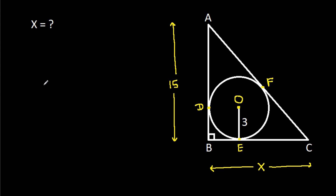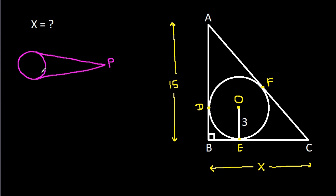Now, in any circle, from any external point P, if we draw two tangents to the circle — suppose the points of tangency are A and B — then PA will be equal to PB.